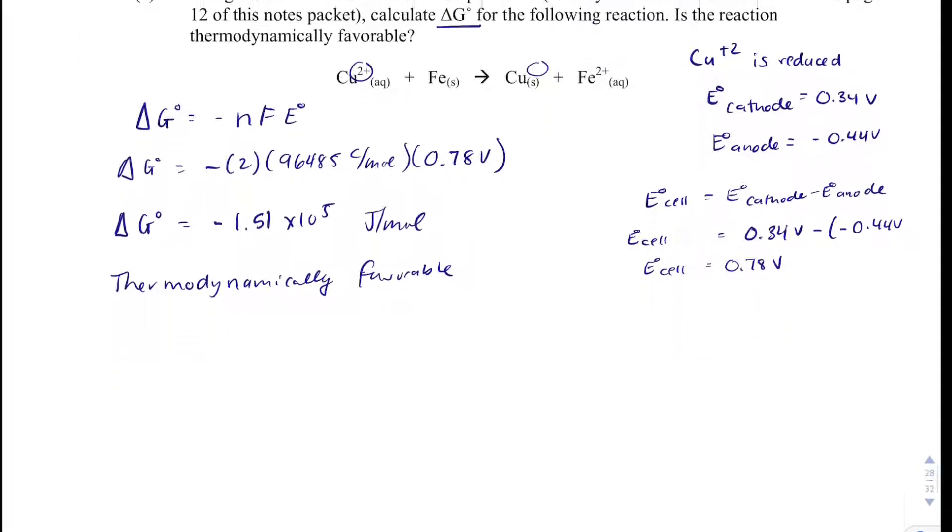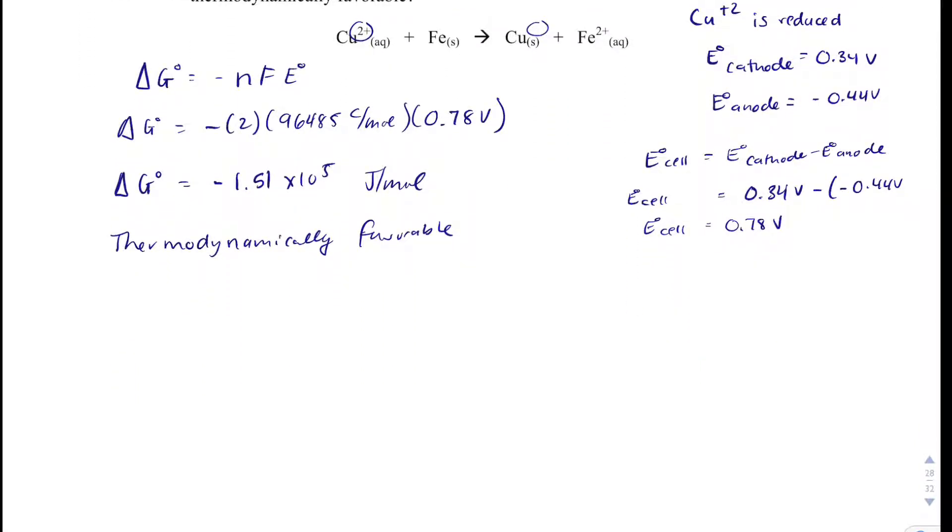Now, I know the question doesn't say it, but I want to show how we get K. So delta G is our middleman. There's an equation: delta G equals minus RT ln K. So let's solve for K. Delta G is negative 1.51 times 10 to the 5th, equals minus 8.314 joules per mole Kelvin. We'll assume we're at 298 Kelvin because we're at standard conditions.